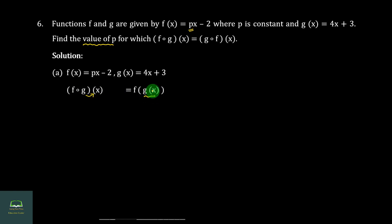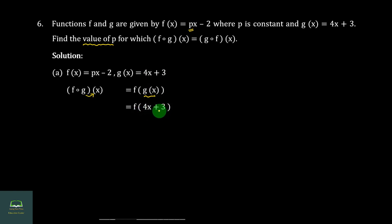G∘F formula: g(x) = 4x plus 3, so f of (4x plus 3). Then x is replaced by (4x plus 3), giving (4x plus 3) into 2.